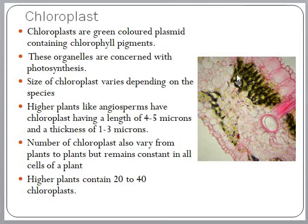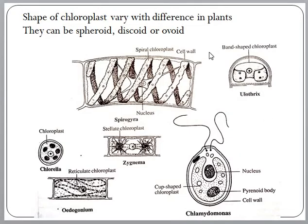Chloroplasts are green colored plastids which contain the pigment chlorophyll. This green coloration is due to the presence of chloroplasts, and the cells which contain chloroplasts are called chlorenchyma, having the function of photosynthesis. Size of chloroplast varies depending on the species. Higher plants like angiosperms have chloroplasts with a length of 4 to 5 microns and a thickness of 1 to 3 microns. The number of chloroplasts also varies by plant species, and each cell contains a constant number of chloroplasts.